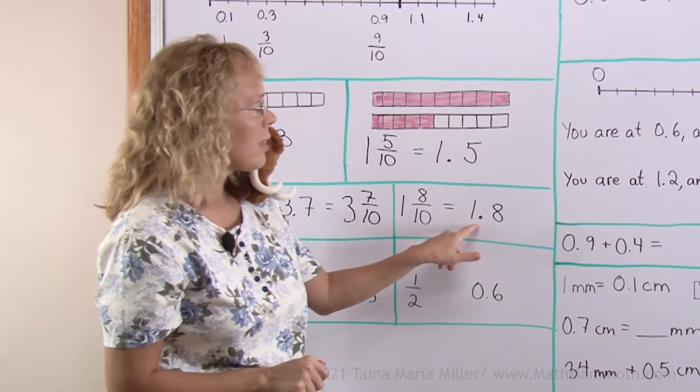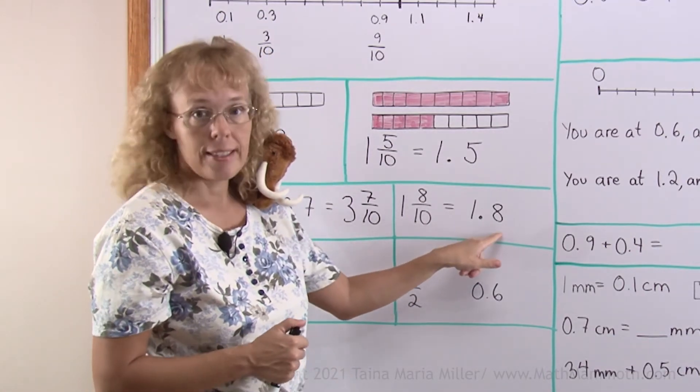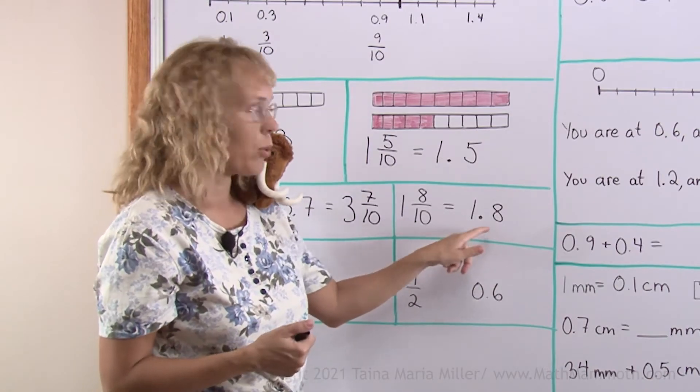And people read decimal numbers like this two ways. They read it as 1 and 8 tenths or 1.8.